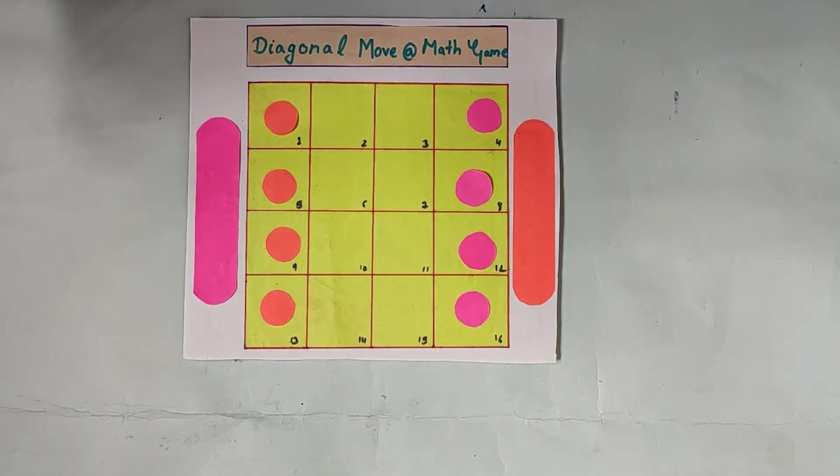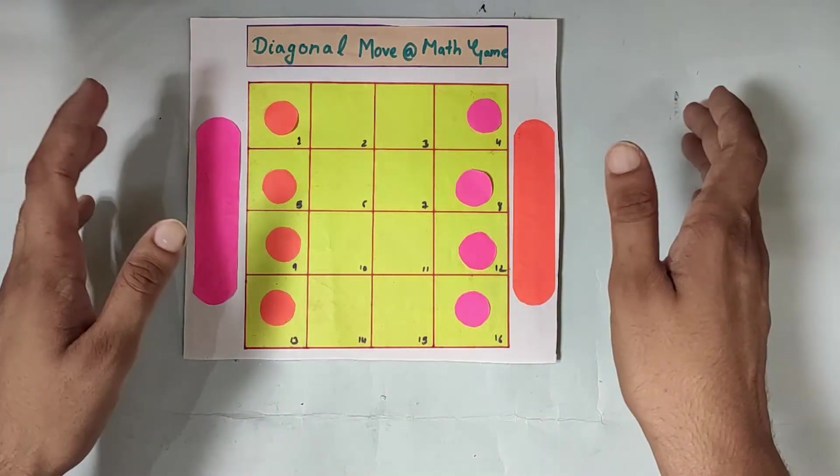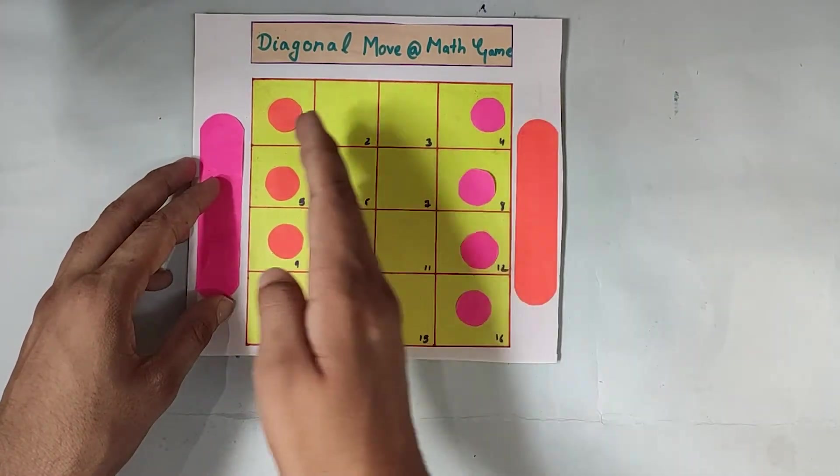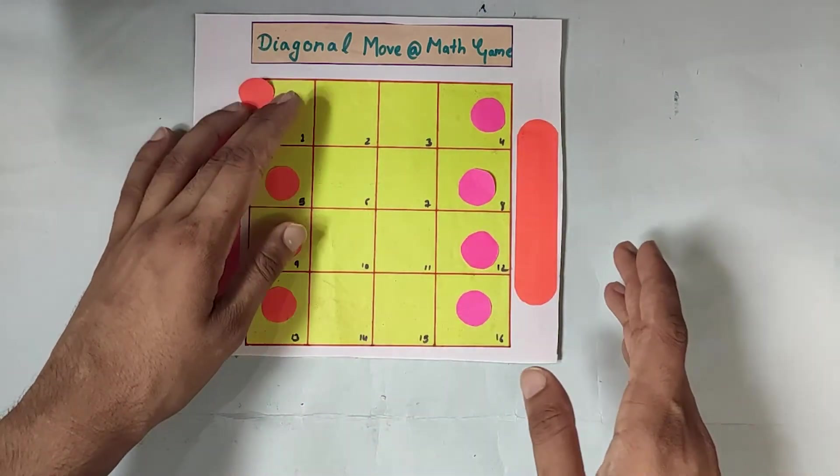The game looks quite simple, right? But actually, it's not. The condition is that you need to move these circles to here and these pink circles to here only in 14 steps.